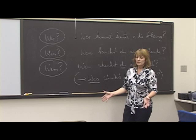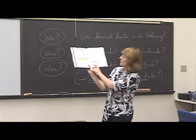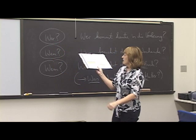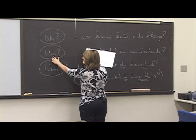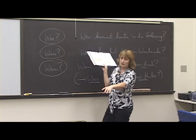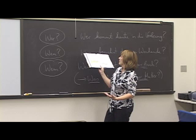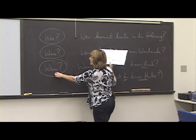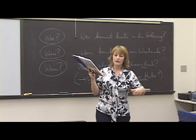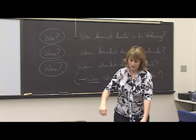Wem schenkst du dieses Buch? We know the direct object. We don't know whom you're giving it to. Examples: Wer ist der Mann? — looking for the subject. Wen hat der Hund gebissen? — the dog bit someone, we know the subject, we're looking for the direct object: whom did he bite? Und zuletzt: Wem schenken sie den Wein? You have den Wein as your direct object, and you're looking for the indirect object — to whom are you giving the wine?